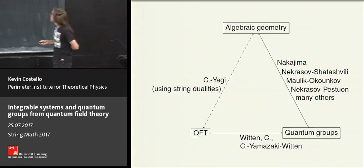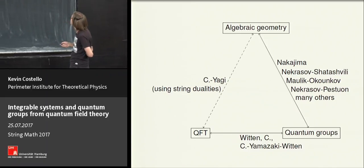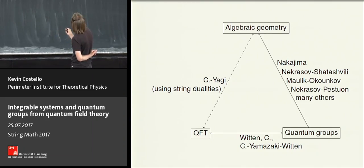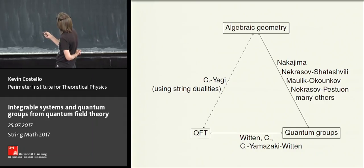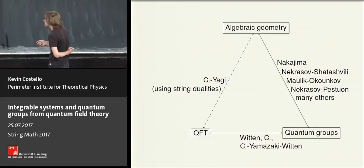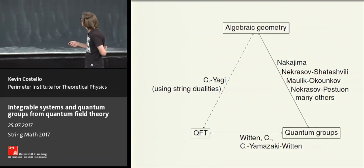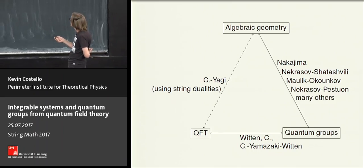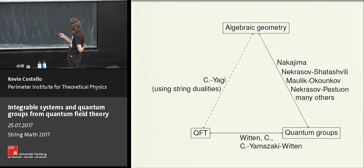There's been a lot of work over many years linking quantum field theory and quantum groups, starting with the work of Witten in the late 80s on Chern-Simons theory, linking Chern-Simons theory with certain integral spin systems. In the last few years, I've been working to generalize this by considering higher-dimensional analogs of Chern-Simons theory — a work in progress with Yamazaki and Witten, and I have a paper from 2013 on this topic.